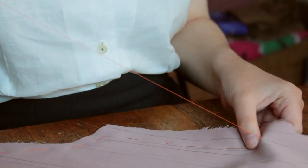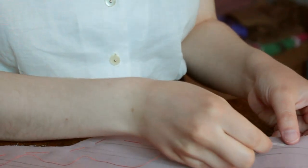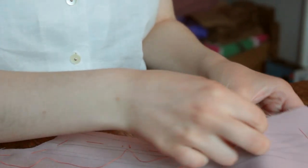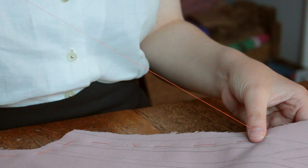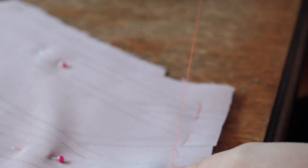Next, I basted the pieces together with orange cotton thread. When basting, I like to use a thread that stands out from the base fabric, and I wanted to use up this bright orange thread anyway.